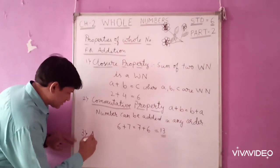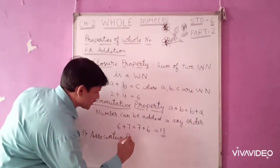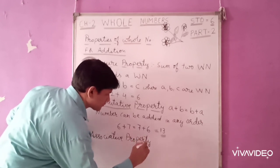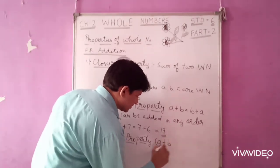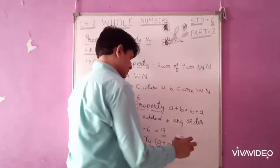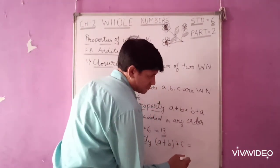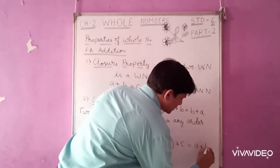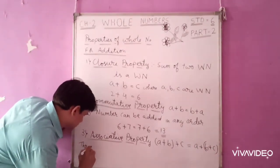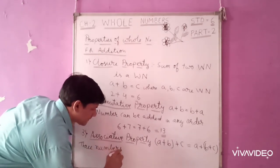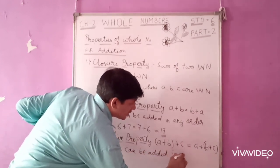The third property is associative property. Here, a plus b in brackets, plus c is equal to a plus b plus c with changed brackets — meaning three numbers can be added in any order.